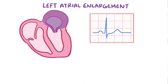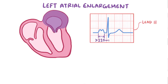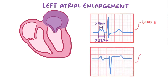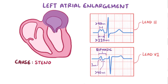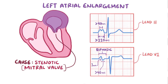In left atrial enlargement, the left atrium has extra muscle tissue, and that results in a P wave with two peaks in lead 2, with the entire thing stretching out over 110 ms, with a gap of over 40 ms separating the two peaks. In lead V1, the P wave is biphasic, meaning that it looks like a hill with a valley alongside it. The negative portion is usually 1 mm deep and lasts for more than 40 ms. Left atrial enlargement also develops from a stenotic valve, but this time it's the mitral valve on the left side, which causes the left atrium to get bigger.